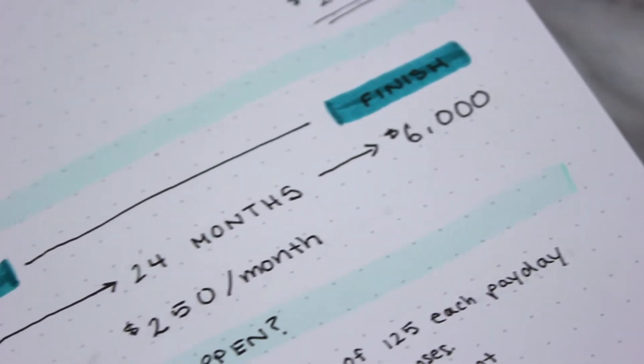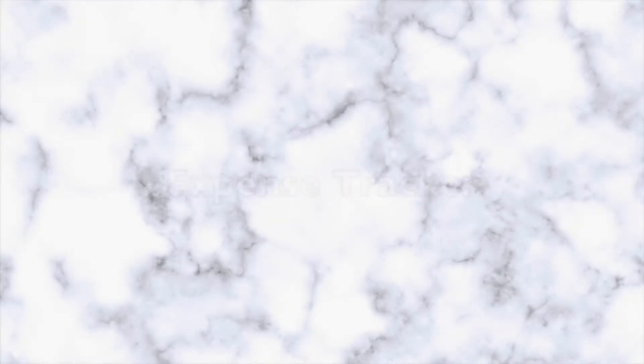Spread number two in this financial plan with me self-care trackers is to track your spending. And I'm going to be doing this through an expense tracker.